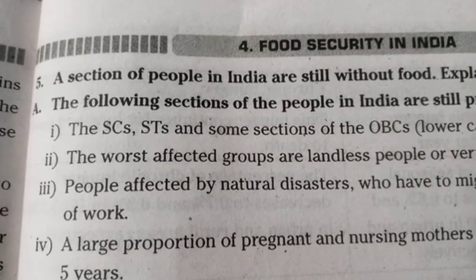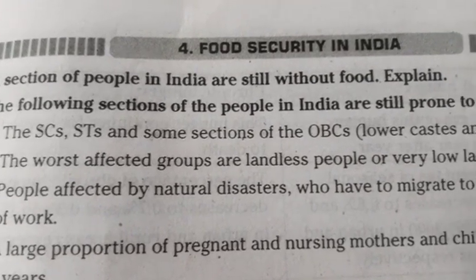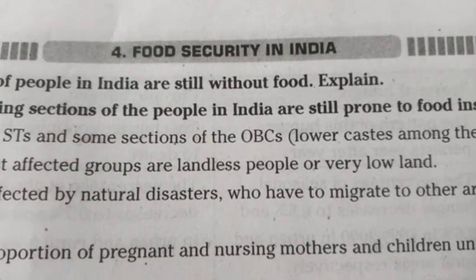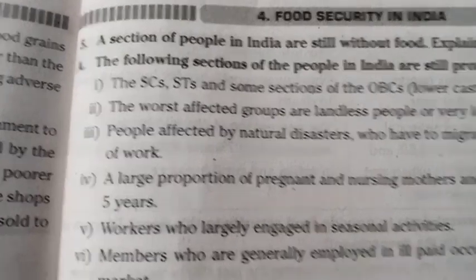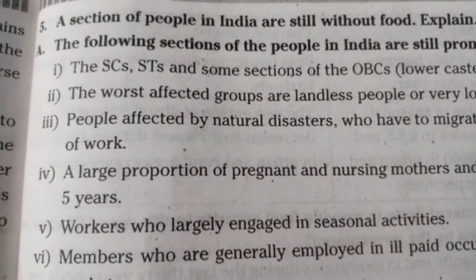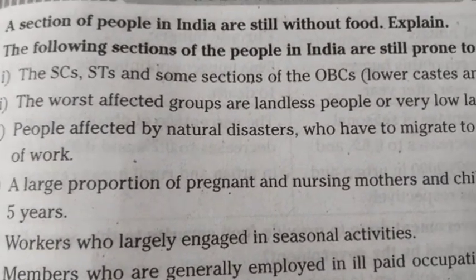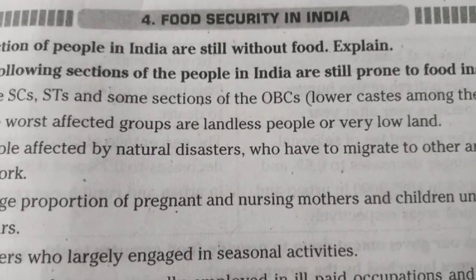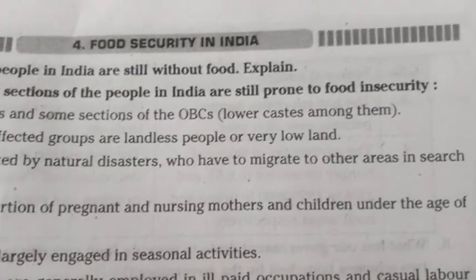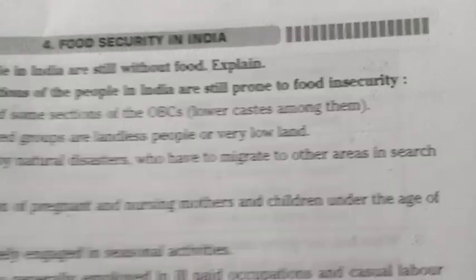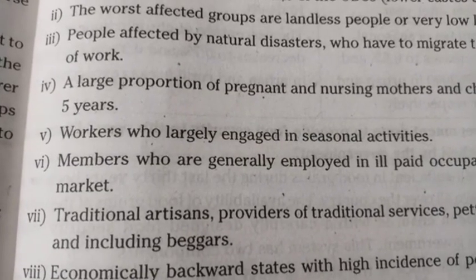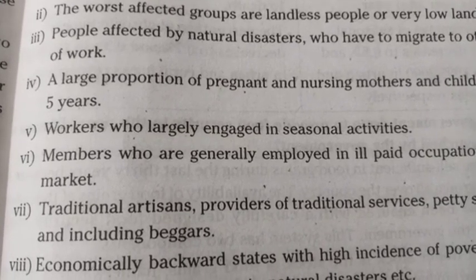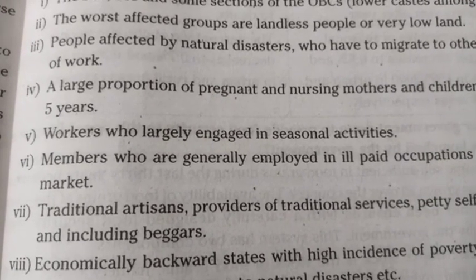3rd Point: People affected by natural disasters who have to migrate to other areas in search of work. 4th Point: A large proportion of pregnant and nursing mothers and children under the age of 5 years. 5th Point: Workers who are largely engaged in seasonal activities.